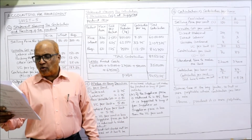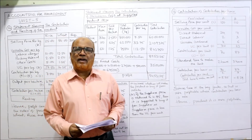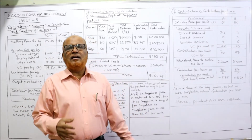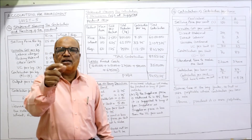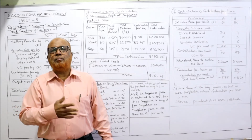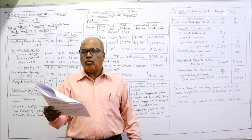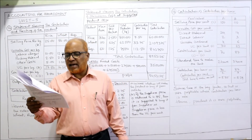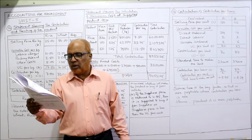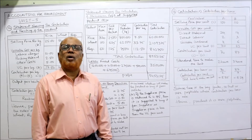Now problem number 16. From the following data, which product would you recommend to be manufactured in a factory, time being the key factor? Similar to the previous problem where land was the key factor, here time is the key factor measured in hours, so we calculate contribution per hour. Two products are given: product A and product B — direct material, direct labor, variable overhead, and selling price are provided.